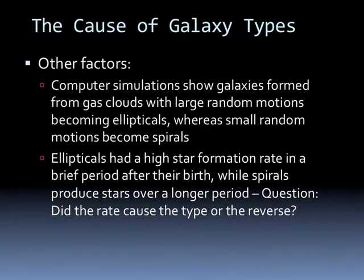Spirals in general rotate relatively faster than ellipticals. The rotation speed of ellipticals of different flattenings shows little or no relation to rotational speed. So rotation plays a role in galaxy types, but other factors probably do also. Computer simulations show galaxies formed from gas clouds with large random motions becoming ellipticals, whereas small random motions became spirals. Ellipticals had a high star formation rate in a brief period after their birth, while spirals produced stars over longer periods of time. The question is: did the rate cause the type, or did the type cause the rate?